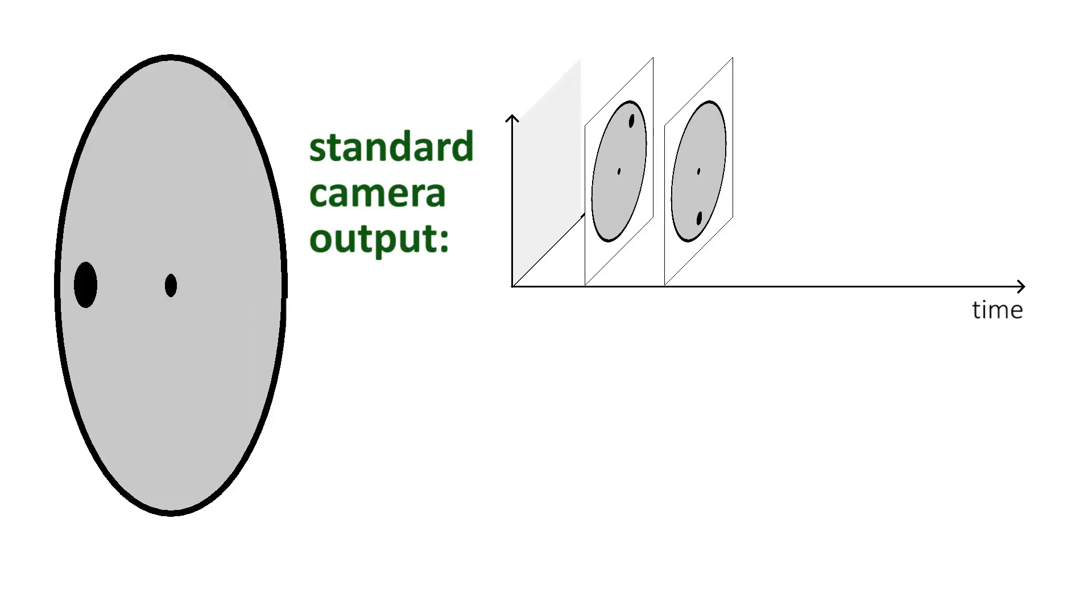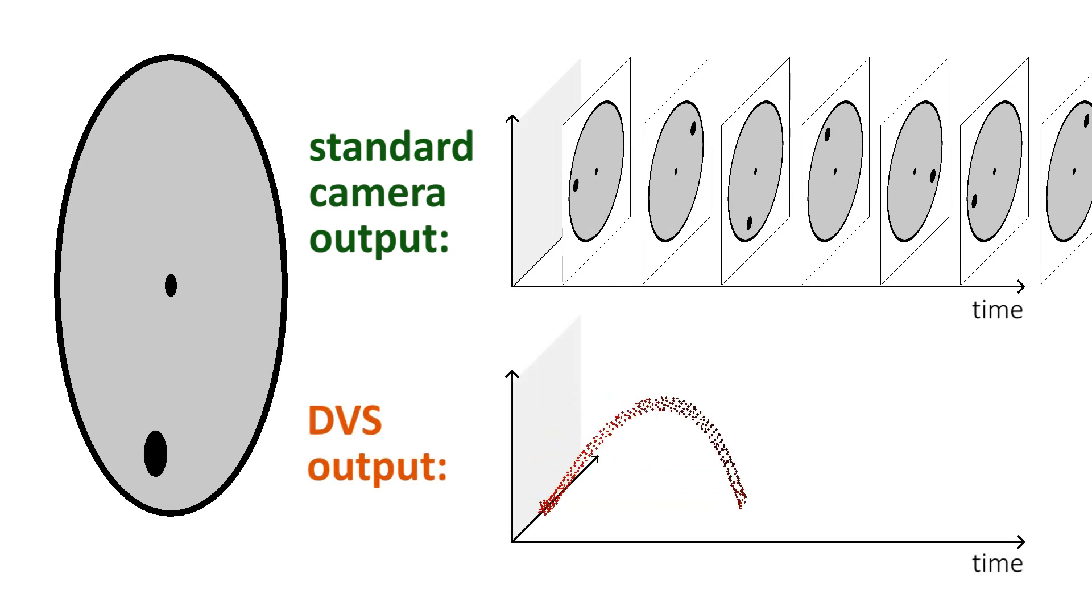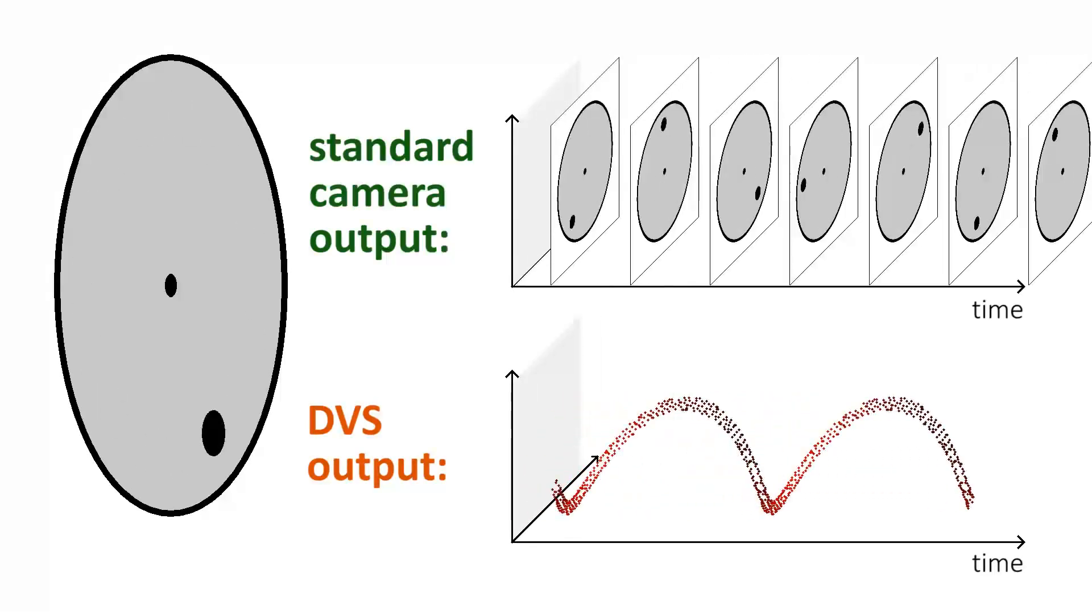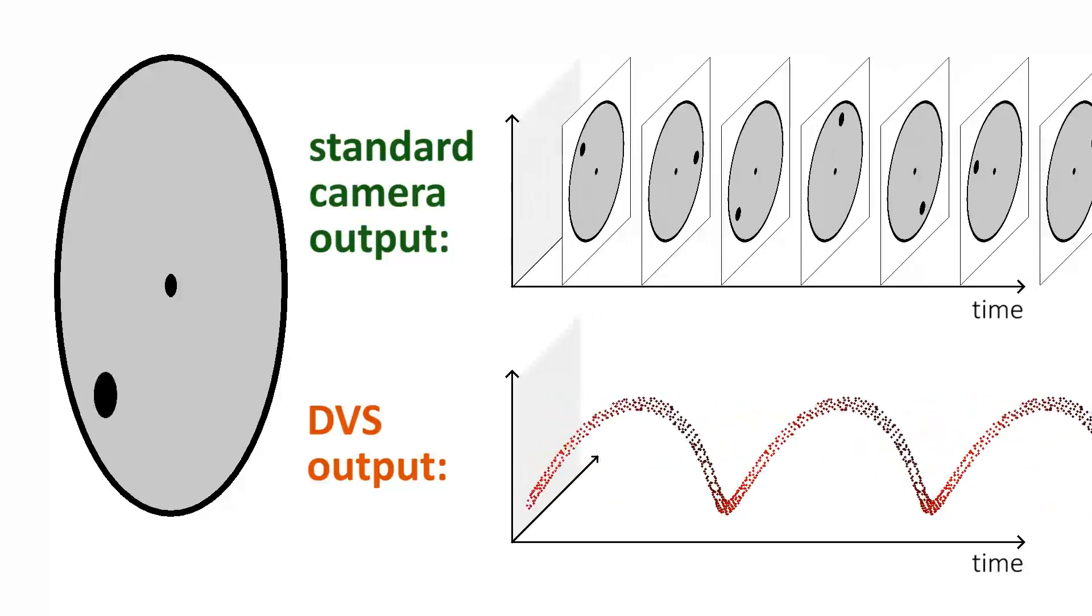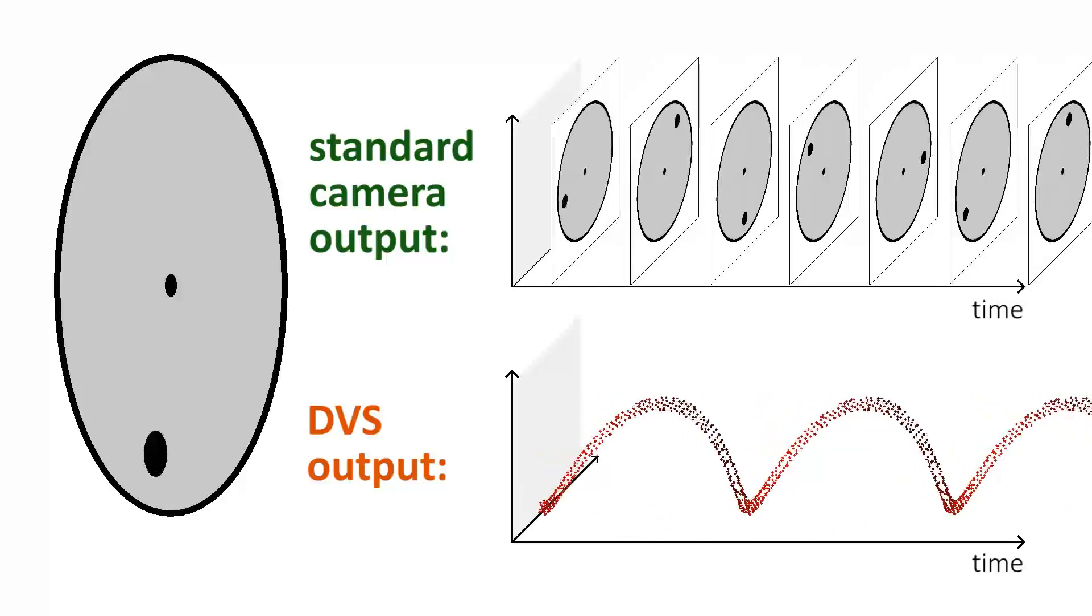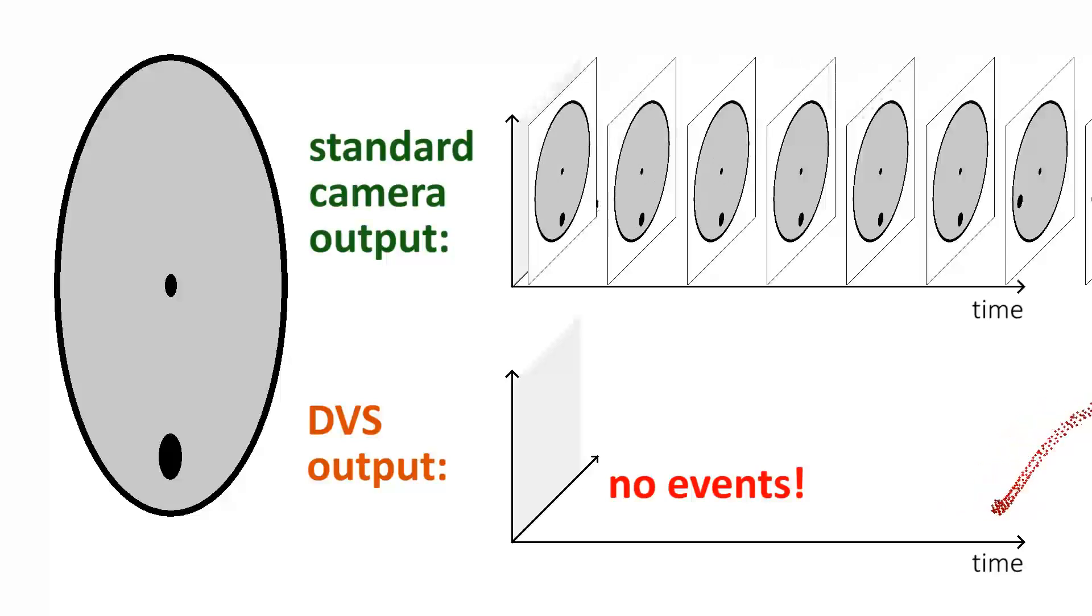To visualize this principle, in this animation, we show the output of a camera and that of a DVS when they are both looking at a black dot on a rotating disk. As we can observe, for the DVS, the events form a spiral in space and time. When the disk stops rotating, no events are generated at all.